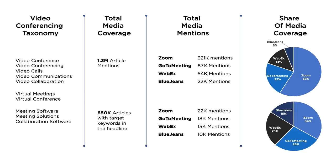If the media is talking about you and nobody else, that's better than if they're talking about you and everybody else. Now, what's different here compared to share of voice using a target media list: the challenge with a target media list is that you're not going to find new opportunities because you're measuring against that finite set of media. With share of coverage, you're pulling in every potential media publication writing about video conferencing, which gives you the opportunity to discover new publications that may not have been on your radar before.